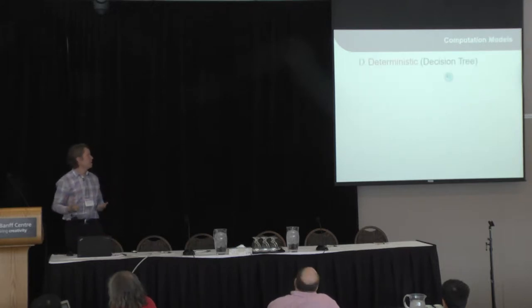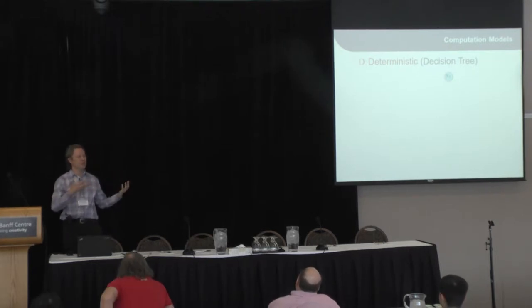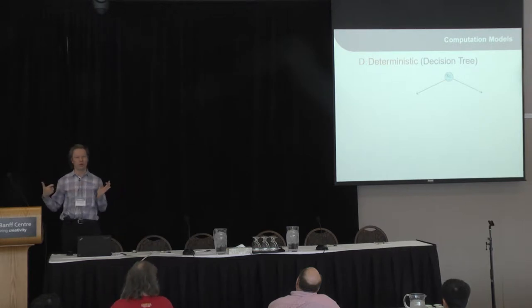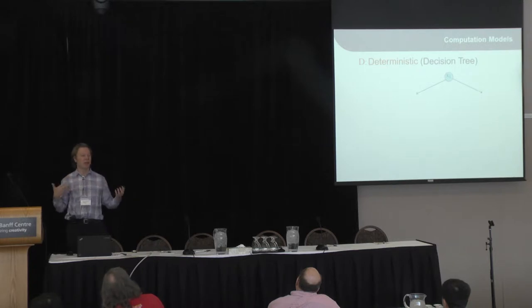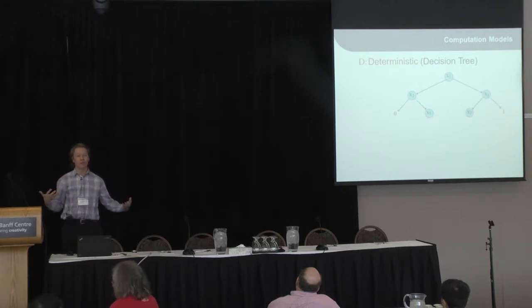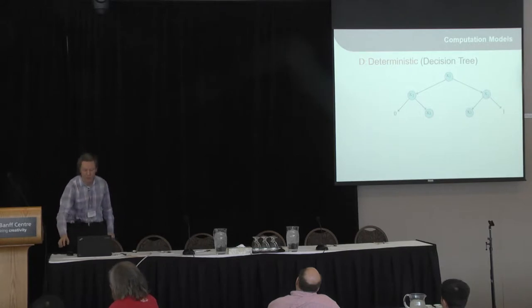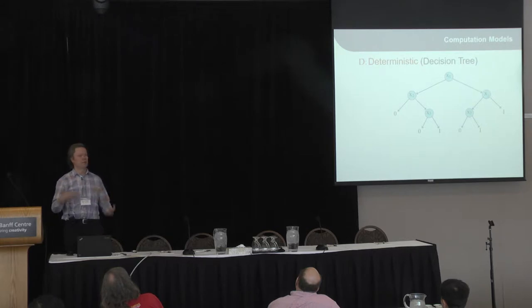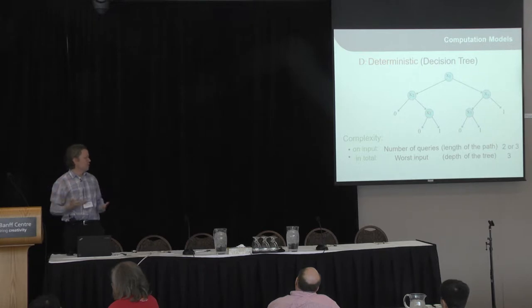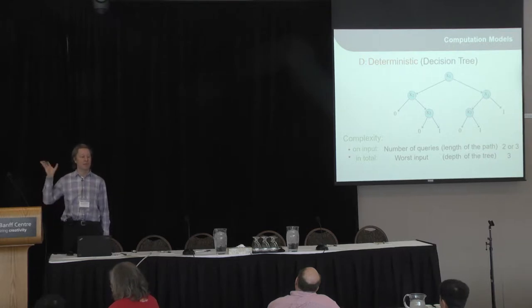A deterministic query algorithm is just a decision tree. It starts by asking the value of some variable, and then based on that value it makes a decision — it goes one way or another. Then it decides on some other variable to ask, gets an answer, and depending on that it either outputs the result or asks another variable, and so on. Complexity is measured by the number of queries. On every input there is some number of queries the algorithm makes, and the complexity of the whole computation is measured by the worst input.